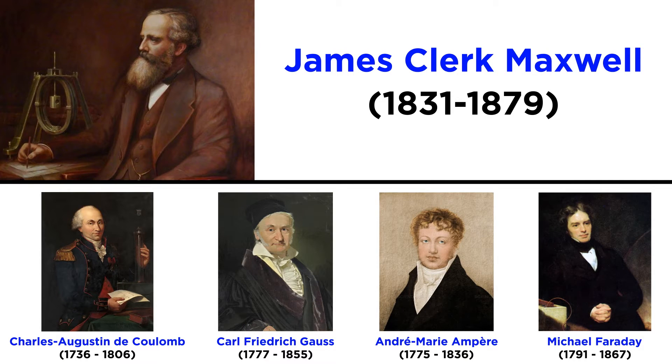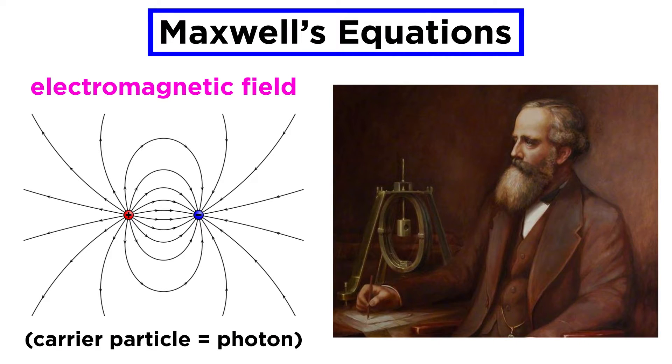Maxwell's equations for electromagnetism elegantly correct and combine almost a hundred years of work by earlier well-known scientists, those being Coulomb, Gauss, Ampere, and Faraday. Formulated almost two hundred years ago, they are still the simplest way to accurately represent the fundamental laws of the electromagnetic field and its carrier particle, the photon.